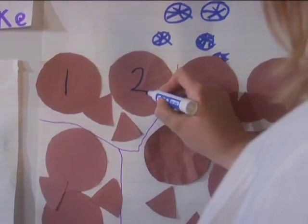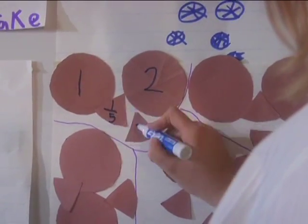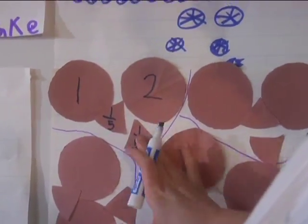So each fifth was for one person. So I could write one cookie, two cookies, and then one-fifth of a cookie? And one-fifth of a cookie? Yeah. Is that what you were saying? Yeah.